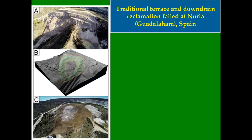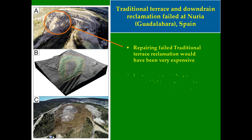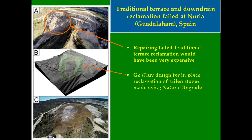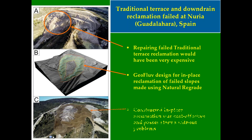Next, let's look at some results users are getting from Geofluv designs made using Natural Regrade. The low-cost repair of failed traditional slope reclamation at Nuria, Spain is an interesting case. Excavating and replacing the failed traditional gradient terrace reclamation would have been very expensive, but a Geofluv design could be made using Natural Regrade to create a stable landform without moving the failed material. This landform has proven to be cost-effective and has passed the runoff from many storms without problems.